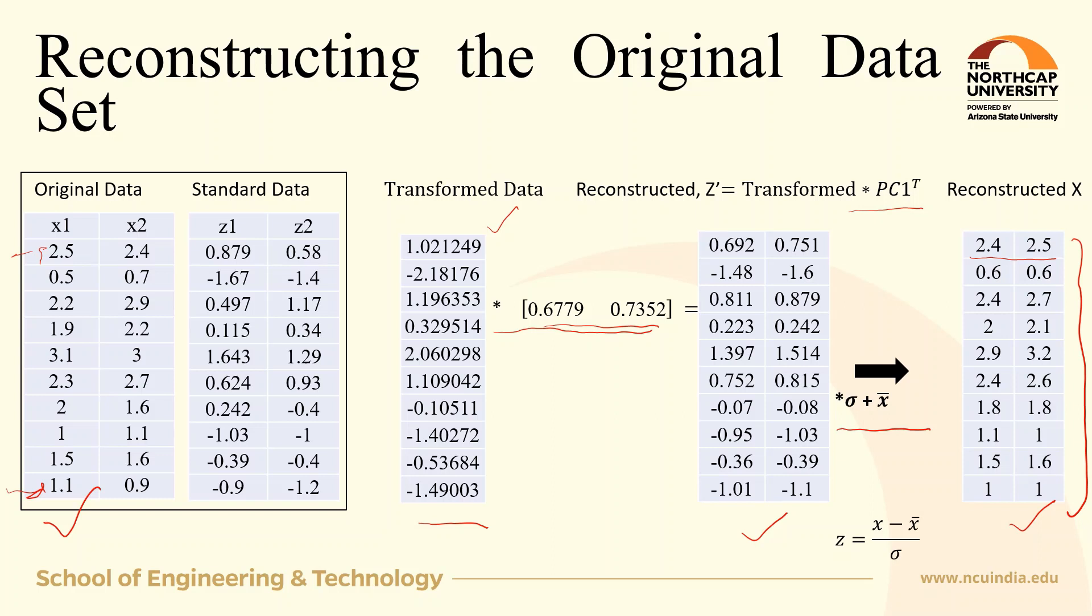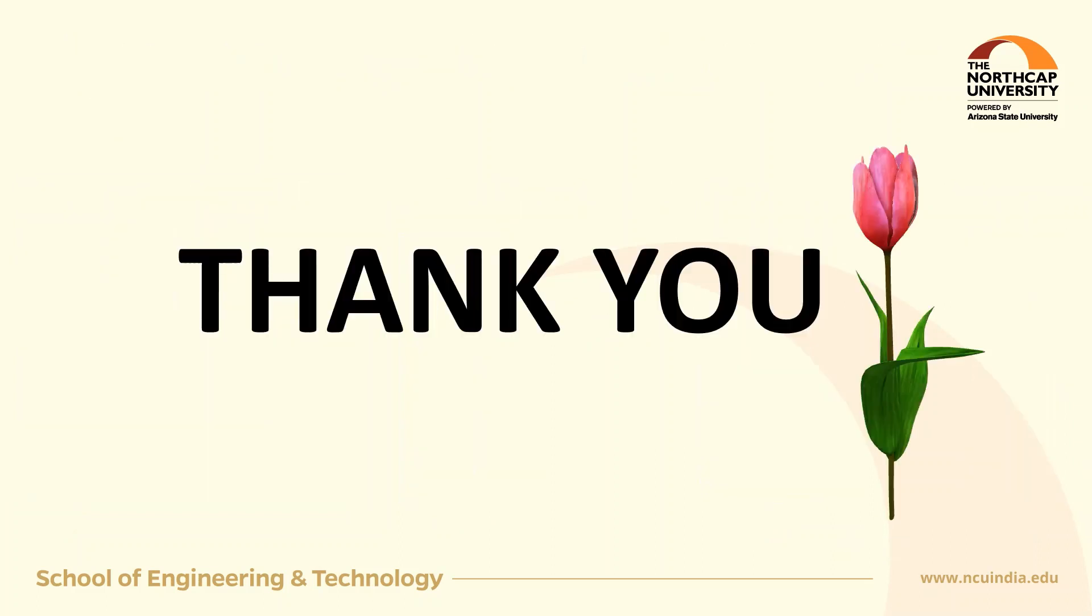By using the first principal component, not much information is lost and we can easily reduce the dimensions of the data set by considering only the first few principal components. This is how you can reduce the number of features or dimensions without losing much information.